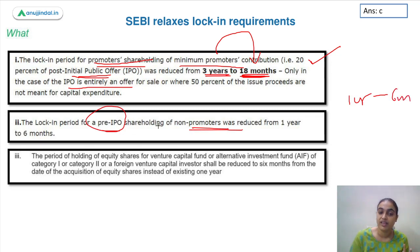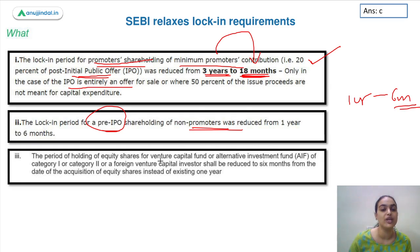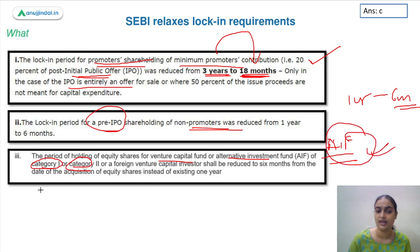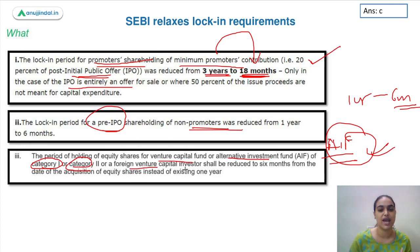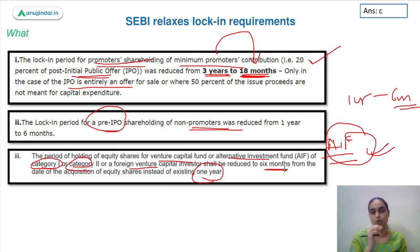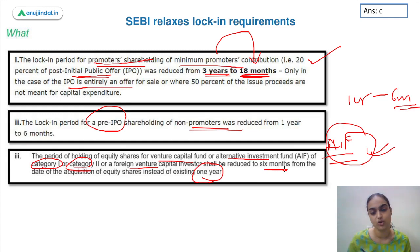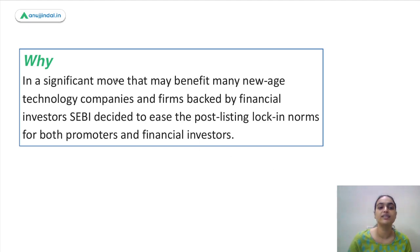For non-promoters subscribing to shares before the IPO, the holding period has been reduced from one year to six months. Similarly, for venture capital funds, Alternative Investment Funds (AIF) Category I and Category II, and foreign venture capital investors investing in shares, the lock-in period has been reduced from one year to six months.